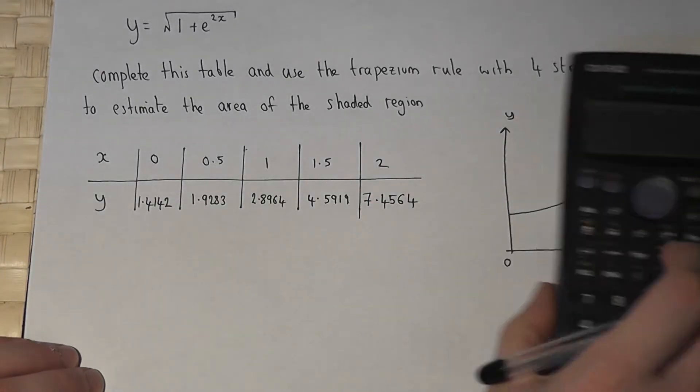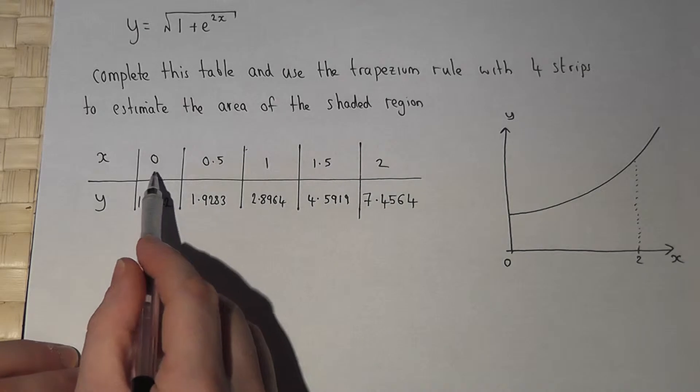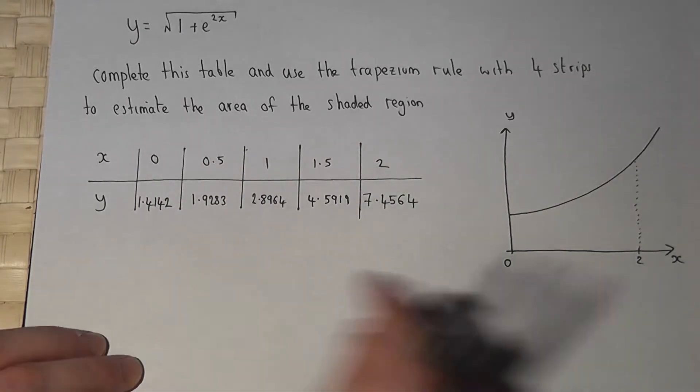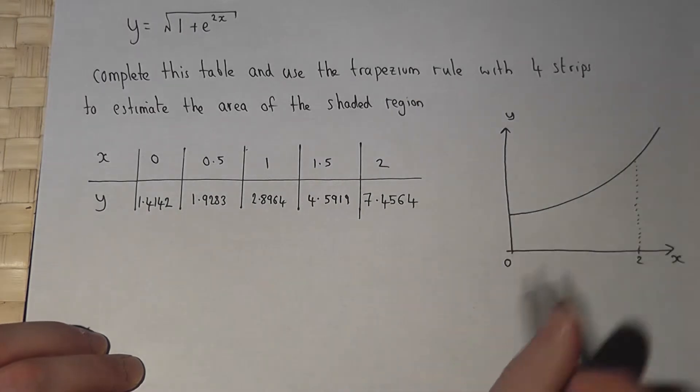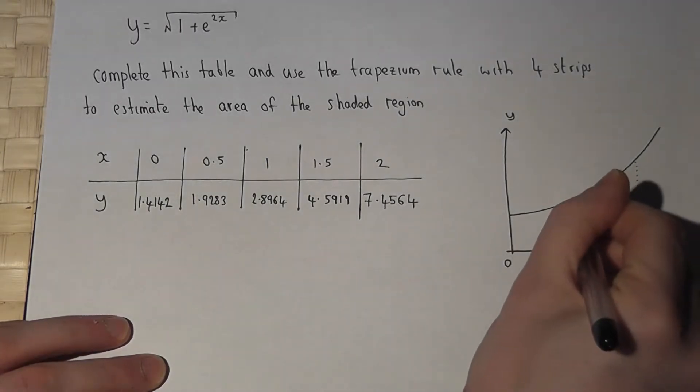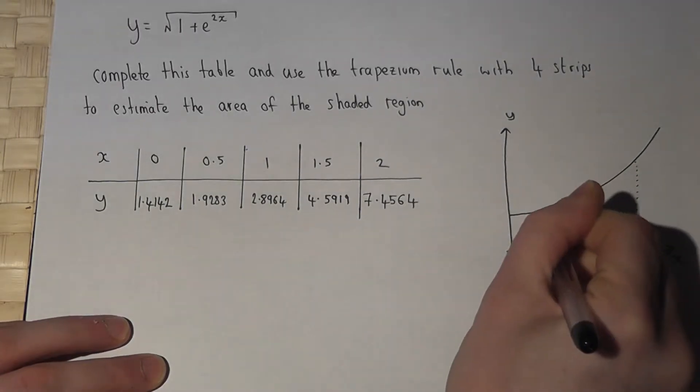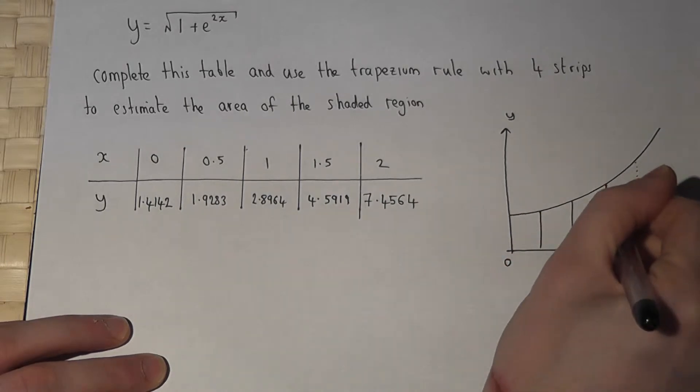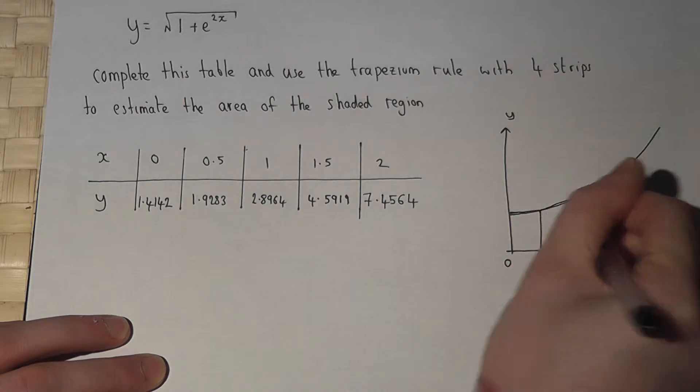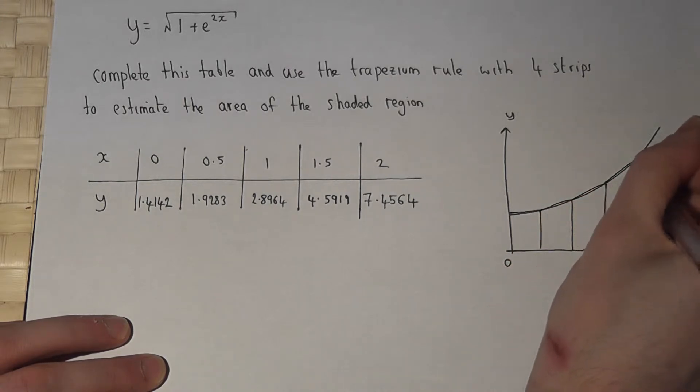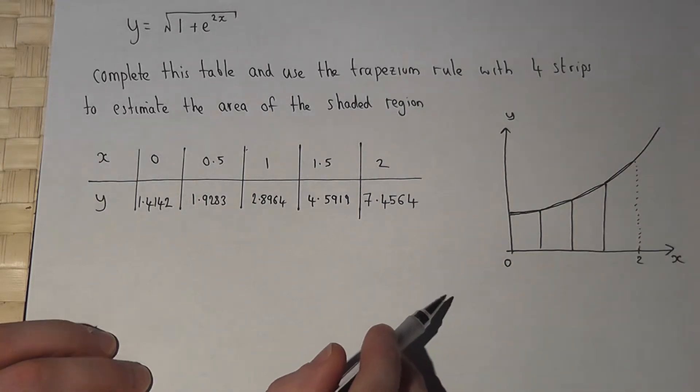So I've now got the y coordinates for these given x coordinates. Now what the trapezium rule says is I can turn this graph into four strips, so I can halve it then halve again, and then work out the area of these four trapeziums to give a pretty good estimate for the area under the graph.